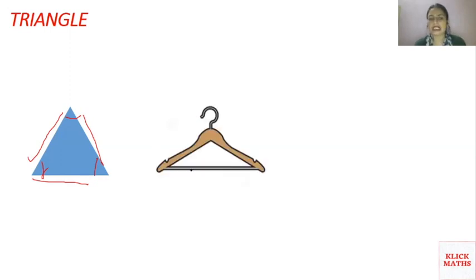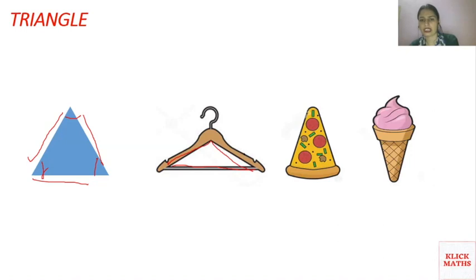Now, you can see this is a hanger and the shape of this hanger is also a triangle. This is also a triangle — you can see. This ice cream cone is also in the shape of a triangle if you look at it.